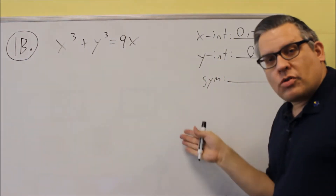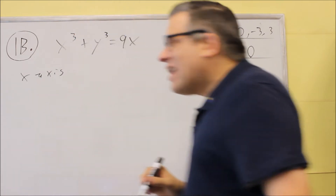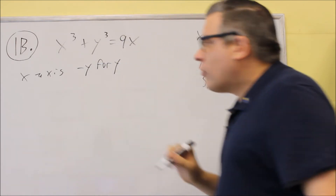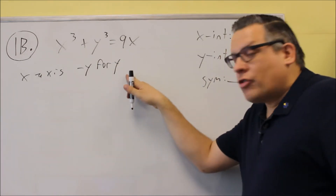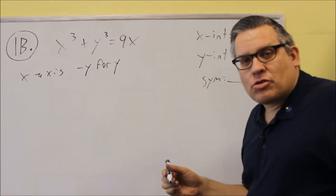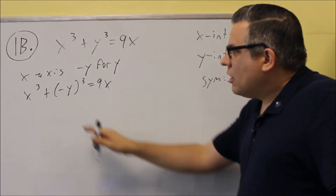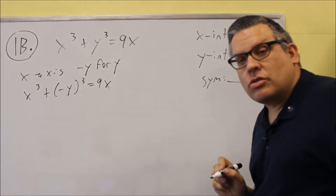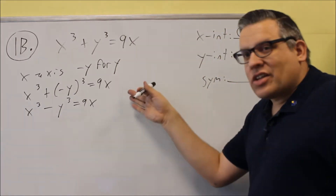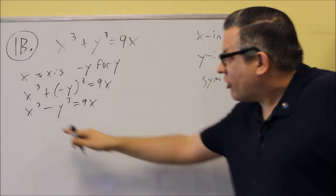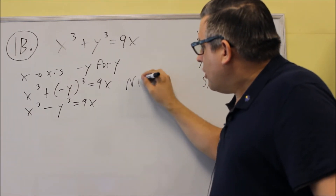For symmetry, make sure you label each part. First, we look for x-axis symmetry by substituting negative y for y in the original equation. We get x cubed plus (negative y) cubed equals 9x, which simplifies to x cubed minus y cubed equals 9x. That's not the same as the original, and multiplying through by a negative doesn't recover it either. So this equation does not have x-axis symmetry.